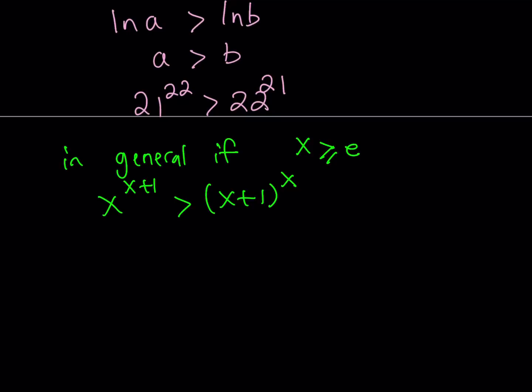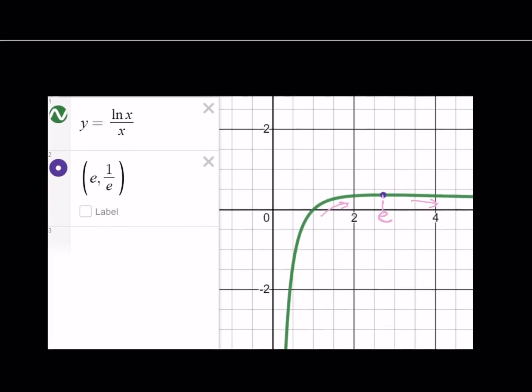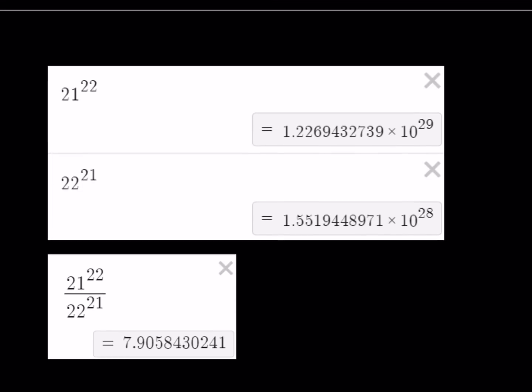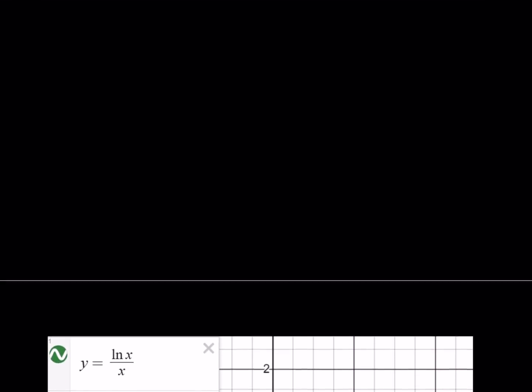All right, so now we're pretty much done, but I'd like to show you a numerical comparison here. That's the graph, and here's the numerical comparison. So, those are the values, and you can see that they're pretty close. You know, one of them has 10 to the power of 29. The other one is 10 to the power of 28. And when you look at their ratio, you kind of see that one of them is about 8 times the other number. So, obviously, 21 to the power of 22 is about 8 times larger than 22 to the power of 21.